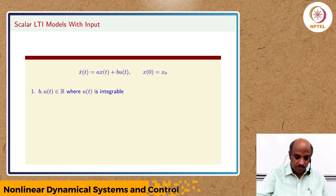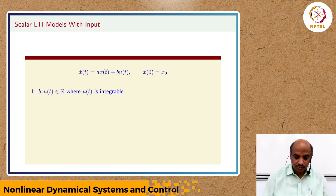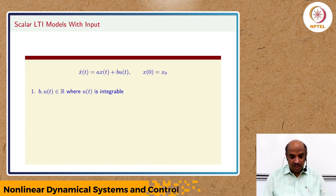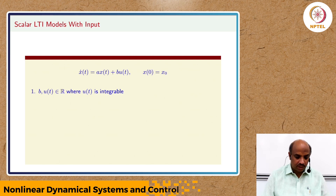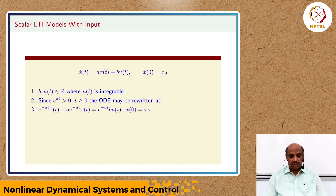Moving forward, we look at a slightly more advanced version: x_dot = ax + bu, called a non-autonomous system, or a scalar model with inputs. The language of input and output is more common in the control systems community. We assume u(t) is integrable with respect to time. We use the same trick of multiplying by e^(−at) and rearranging, since e^(at) is positive and invertible.